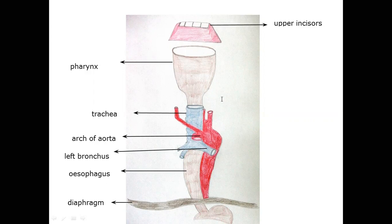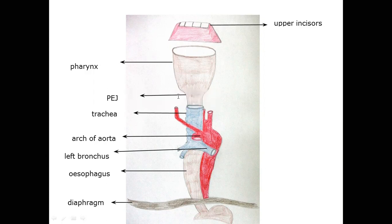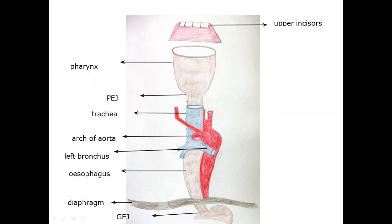Now we are going to see two important junctions. The first is the pharyngo-esophageal junction, which I will mention as PEJ — this is where the esophagus starts. The next is the gastroesophageal junction, which I will mention as GEJ — this is where the esophagus ends. One junction where it starts and the other where it stops.